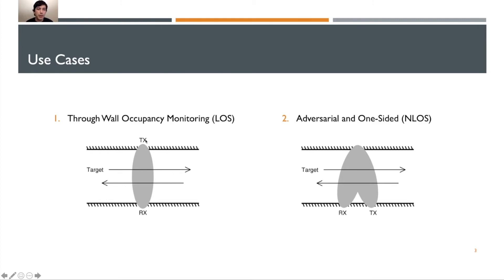The second use case is more of an adversarial method. What would an adversary be able to do? They place their transmitter and receiver both on the same side of the wall, in one room. This is considered non-line of sight, or NLOS, because the target is no longer moving in between the transmitter and the receiver.